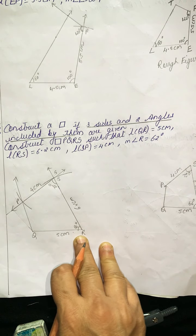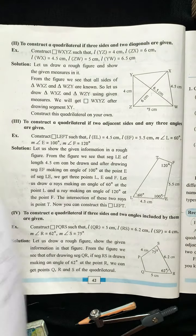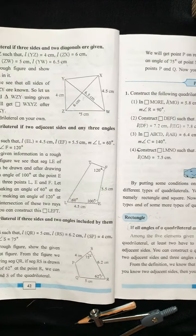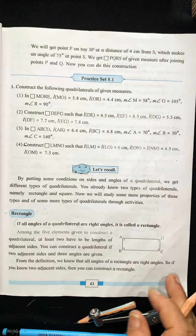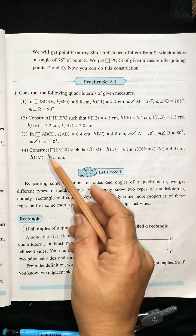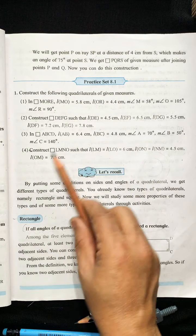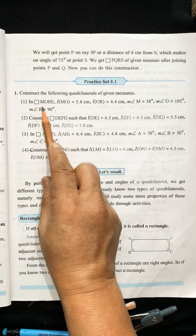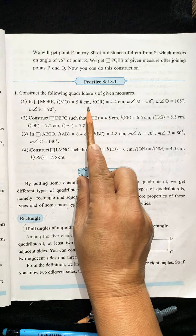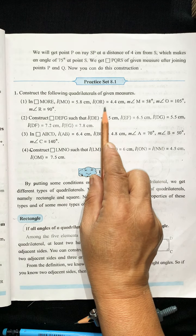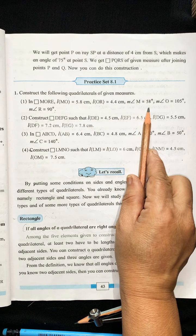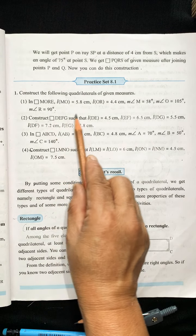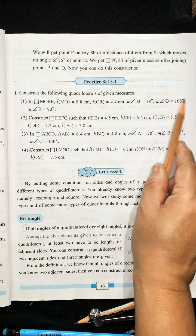So you can draw all the various types of constructions. Now let us go to the exercise — I will solve 2 problems and the other 2 you will solve at home. Construct the following quadrilaterals. First, in quadrilateral MORE: MO = 5.8 cm, OR = 4.4 cm, angle M = 58°, angle O = 105°, angle R = 90°. Draw a rough figure first — 3 angles are given.